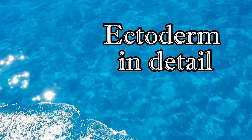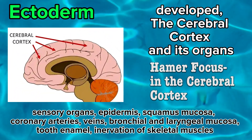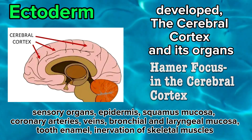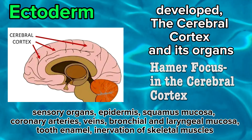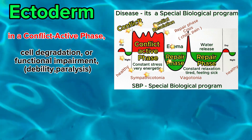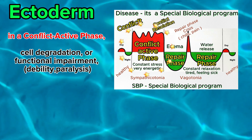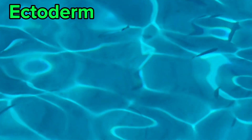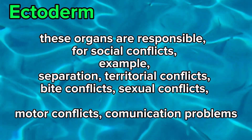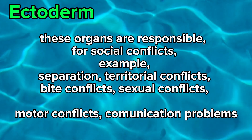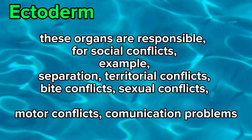Ectoderm in detail: it develops the cerebral cortex and its organs — sensory organs, epidermis, squamous mucosa, coronary arteries, veins, bronchial and laryngeal mucosa, tooth enamel, innervation of skeletal muscles. In the conflict active phase: cell degradation or functional impairment, paralysis. In the repair phase: cell structure or function restoration. These organs are responsible for social conflicts — for example, separation, territorial conflicts, bite conflicts, sexual conflicts, motor conflicts, and communication problems.